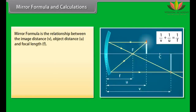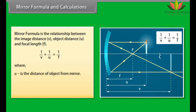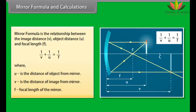The mirror formula is the relationship between image distance V, object distance U, and focal length F: 1/V + 1/U = 1/F, where U is the distance of the object from the mirror, V is the distance of the image from the mirror, and F is the focal length of the mirror.